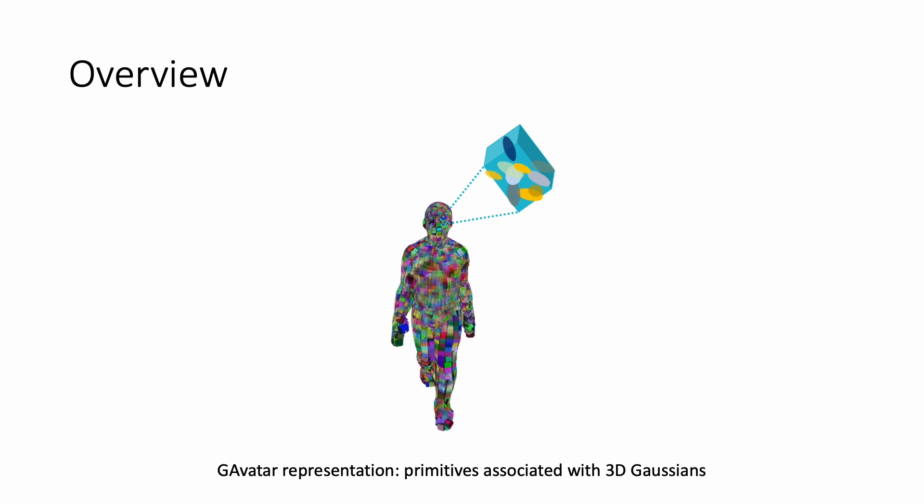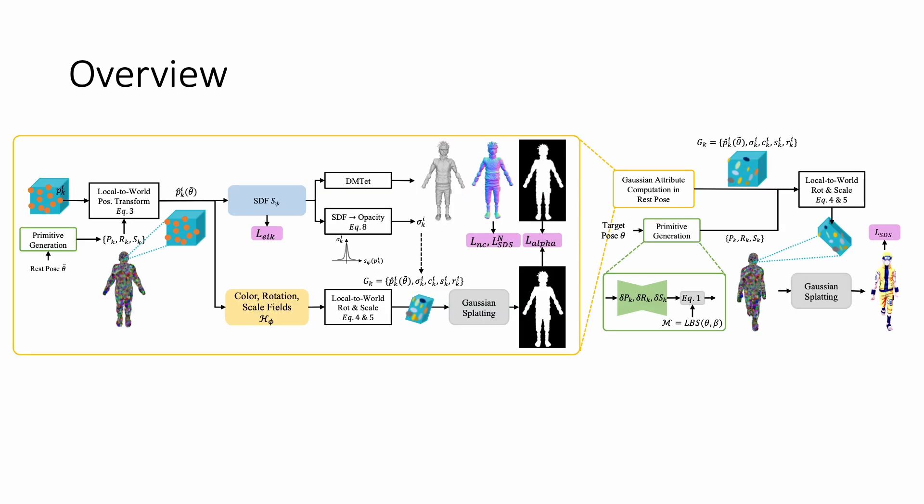Our method, Gavartar, represents an animatable human avatar using a collection of primitives, with each primitive associated with a set of 3D Gaussians. Our method includes two main processes.